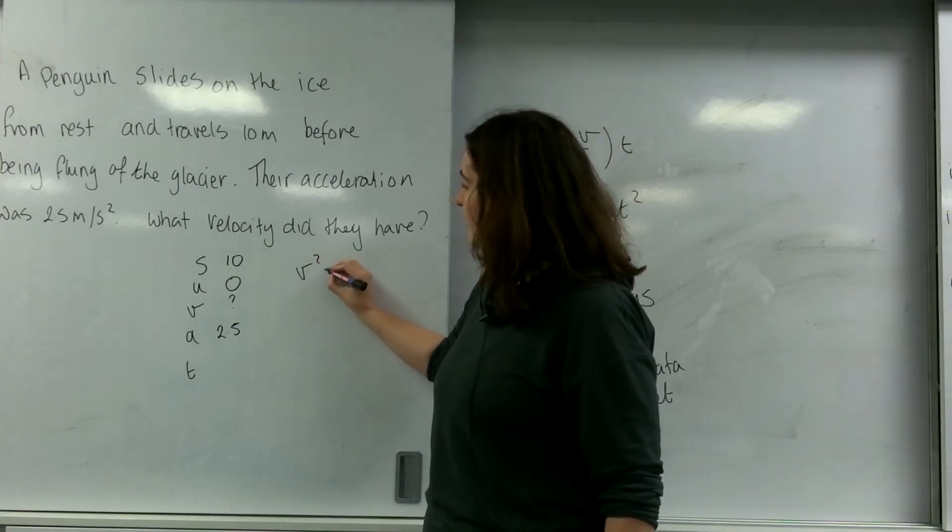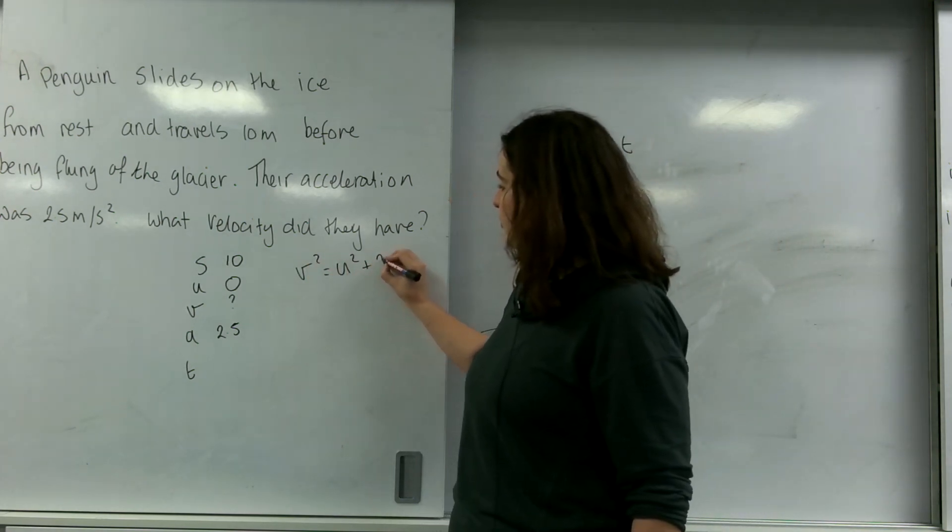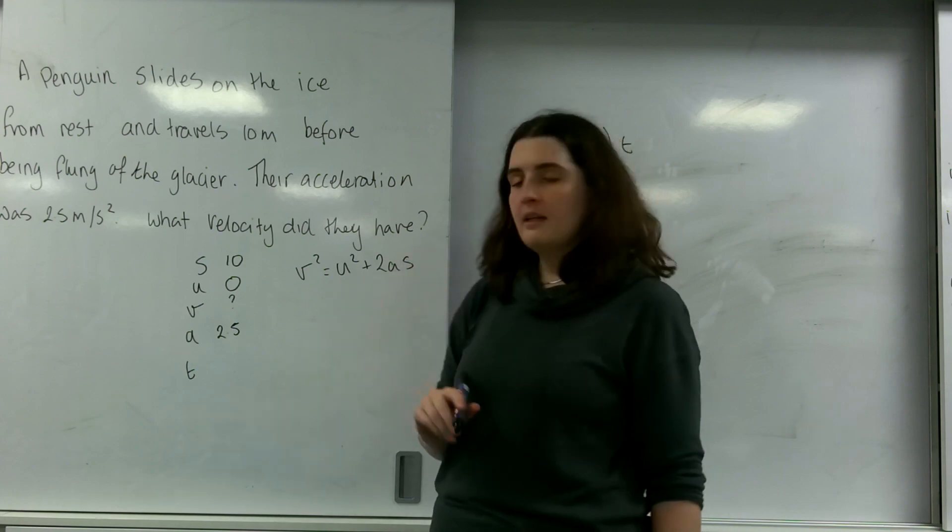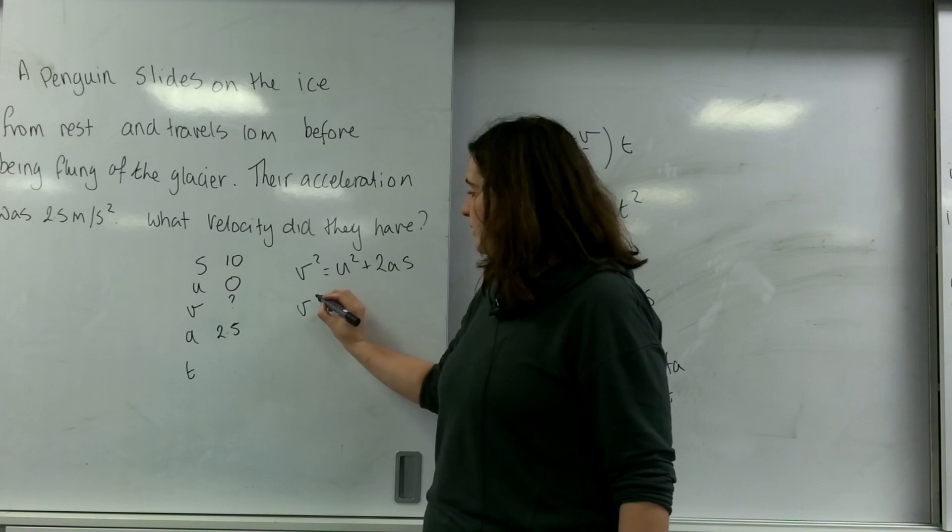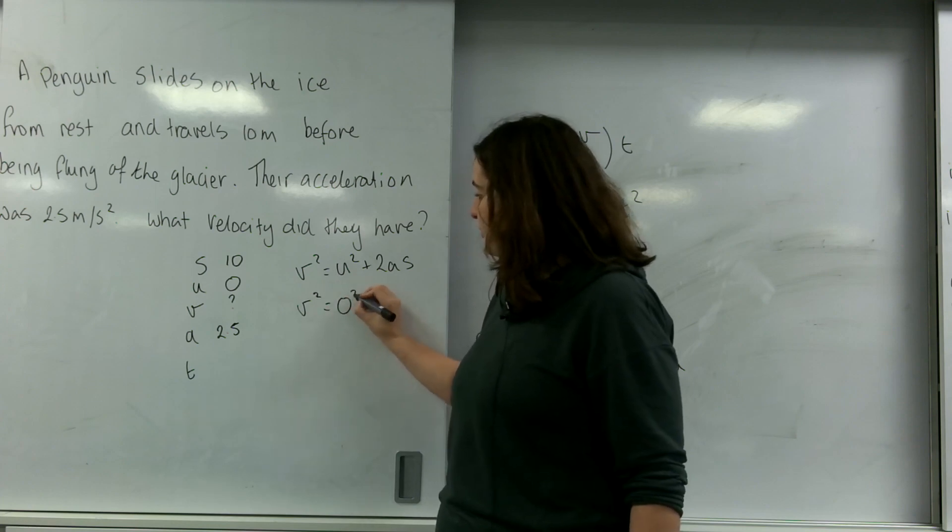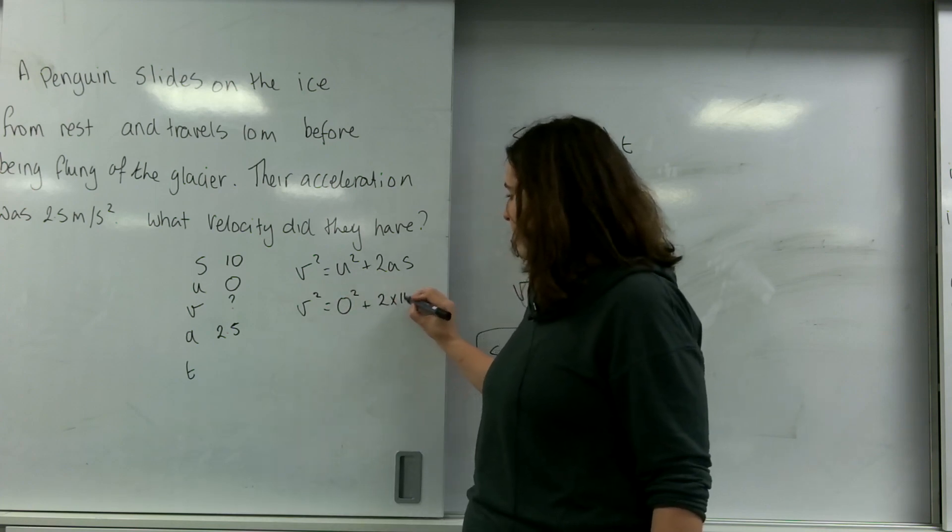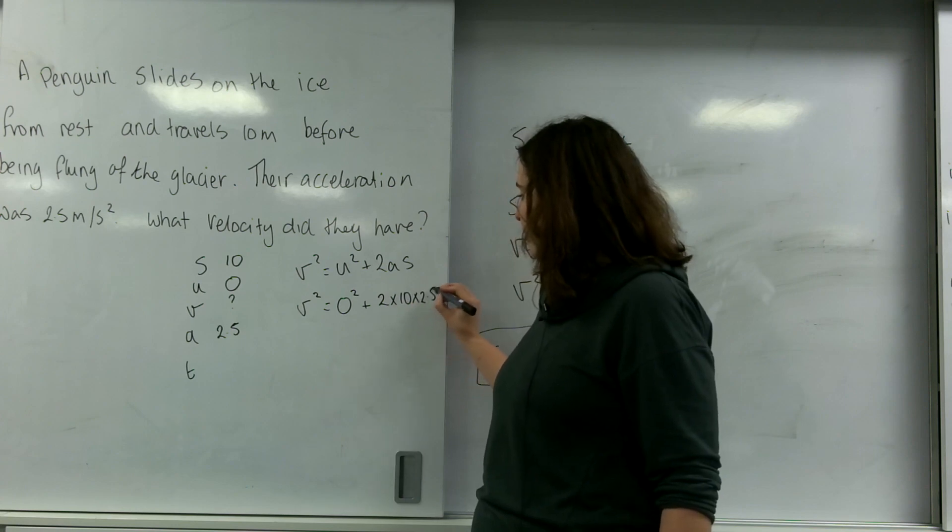So V squared equals U squared plus 2AS. So I'm going to fill this in. V squared equals 0 squared plus 2 times 10 times 2.5.